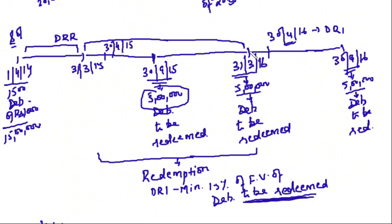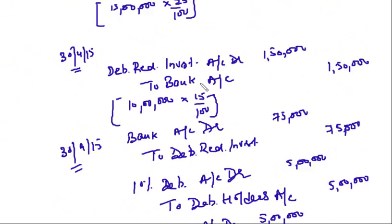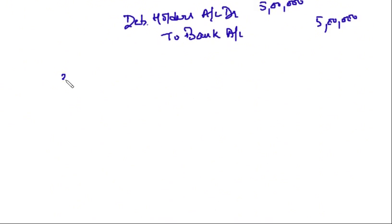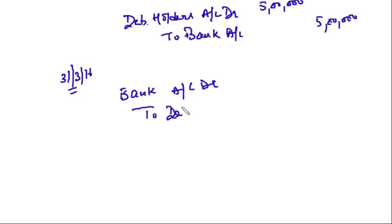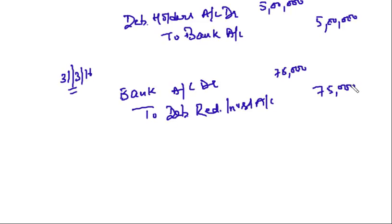Now we come to 31st March 2016. First, encash the remaining investments of Rs. 75,000: Bank Account Dr. to Debenture Redemption Investment Account — Rs. 75,000. We could not encash this on 30th September because on that date we redeemed only 5 lakh, whereas the investment was done on 10 lakh. So encash investments only to the extent the debentures are redeemed, just before redemption.